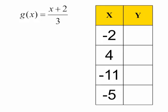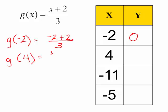Okay, so here's a table, and I'm going to plug in a few points for our g function. g at negative 2, that will be negative 2 plus 2 over 3, which is 0 over 3, or just 0. Let's find g at 4, that will be 4 plus 2 over 3, which is 6 over 3, which is 2.